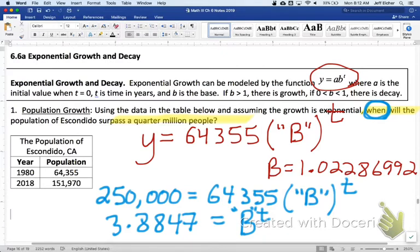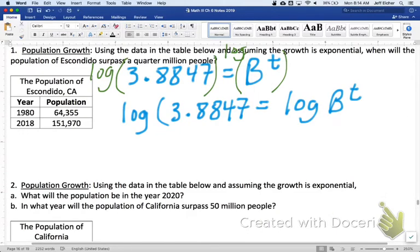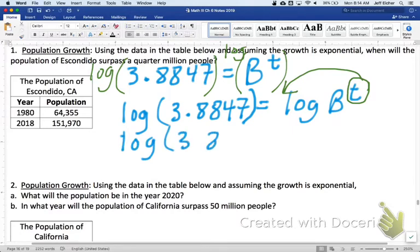And then we solve this, we're going to isolate the b, so divide both sides by that 64,000, and we would get 3.8847, et cetera, et cetera, long decimal, equals our base b to the t. And then algebraically solving, like we've done in a prior lesson, we're going to log both sides, and bring the t out in front of the log. So, let me get a little more computer screen to work with.